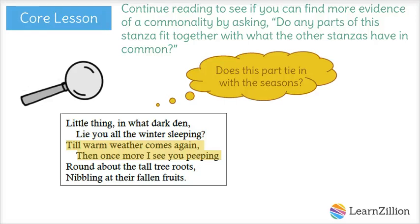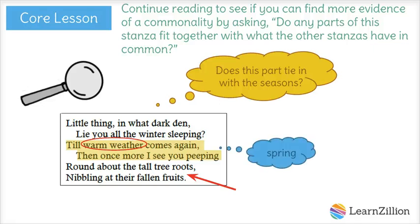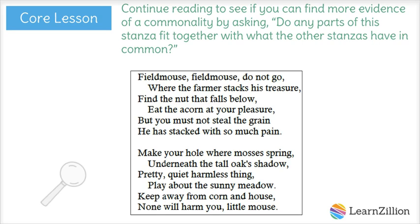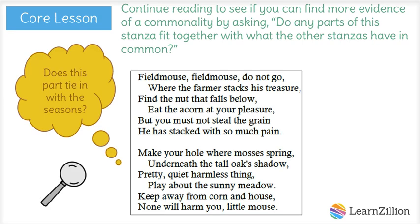Well, warm weather definitely signals a change in the season — it can't be winter anymore. I also noticed that the mouse is doing something really different. In winter he was hibernating, but now he's peeping around the tall tree roots, nibbling at their fallen fruits. This must mean he's looking around to find food — he must be awake and hungry after his long winter nap. All this seems to tell me that the setting is now springtime, so sure enough, this also ties in with the seasons.